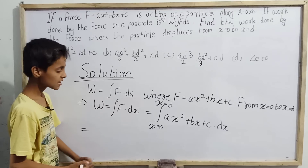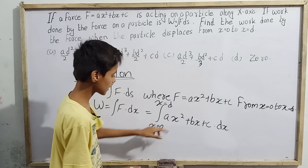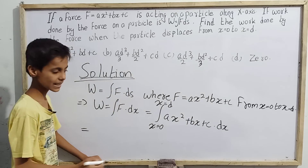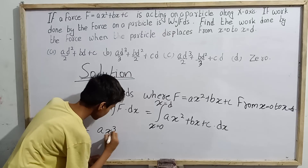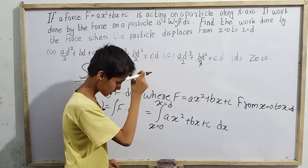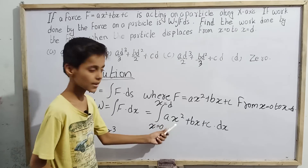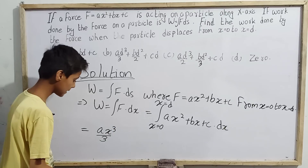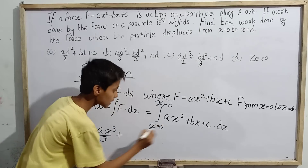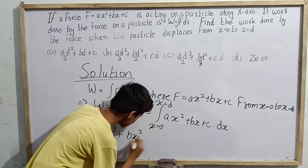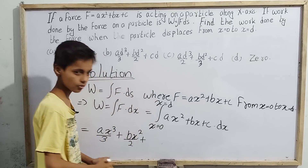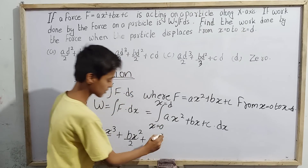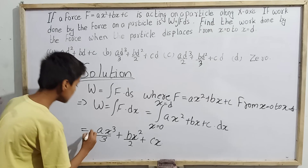Now we integrate term by term using the power rule: x^n integrates to x^(n+1)/(n+1). Integrating ax² gives ax³/3; integrating bx gives bx²/2; and integrating c gives cx, since x to the power 1 divided by 1 is cx itself.